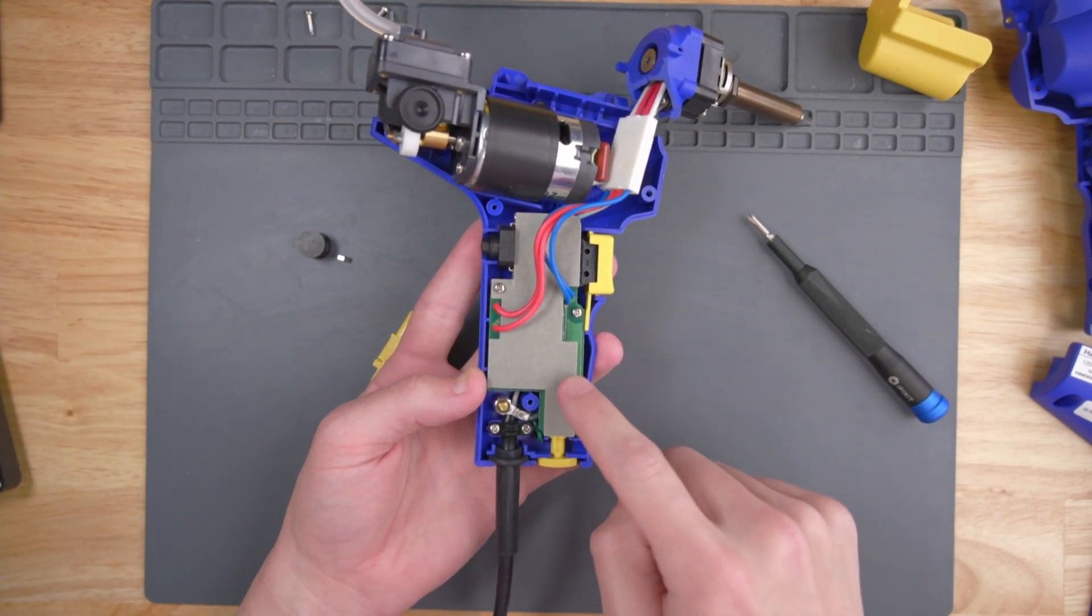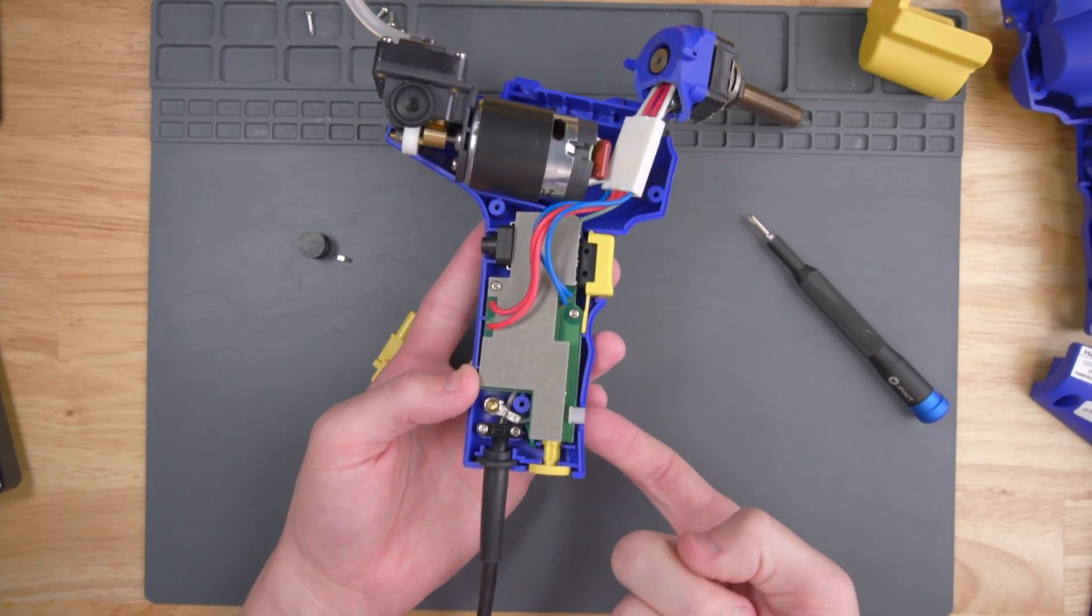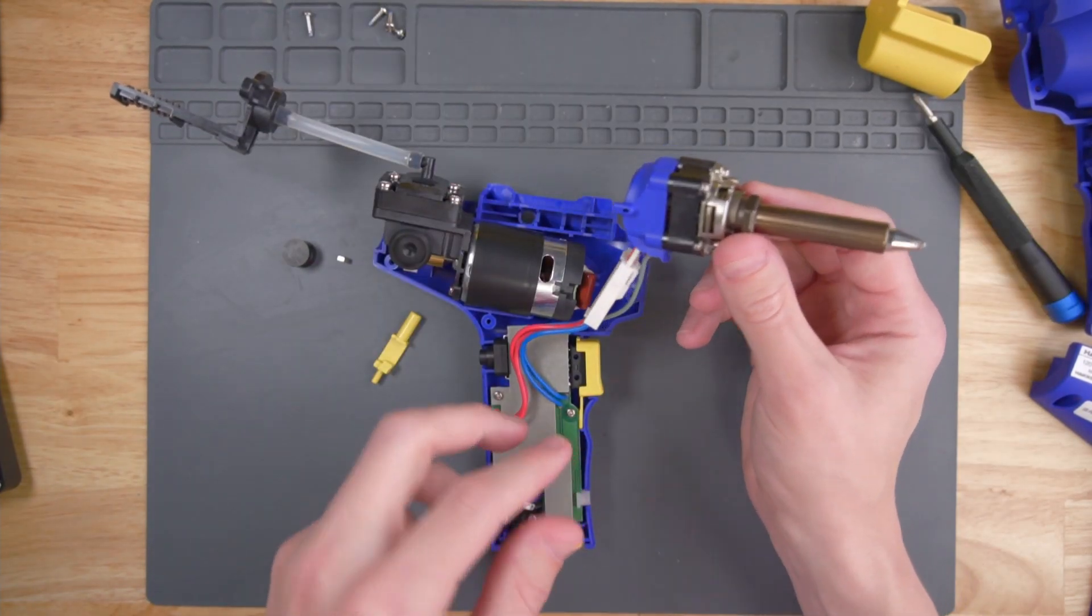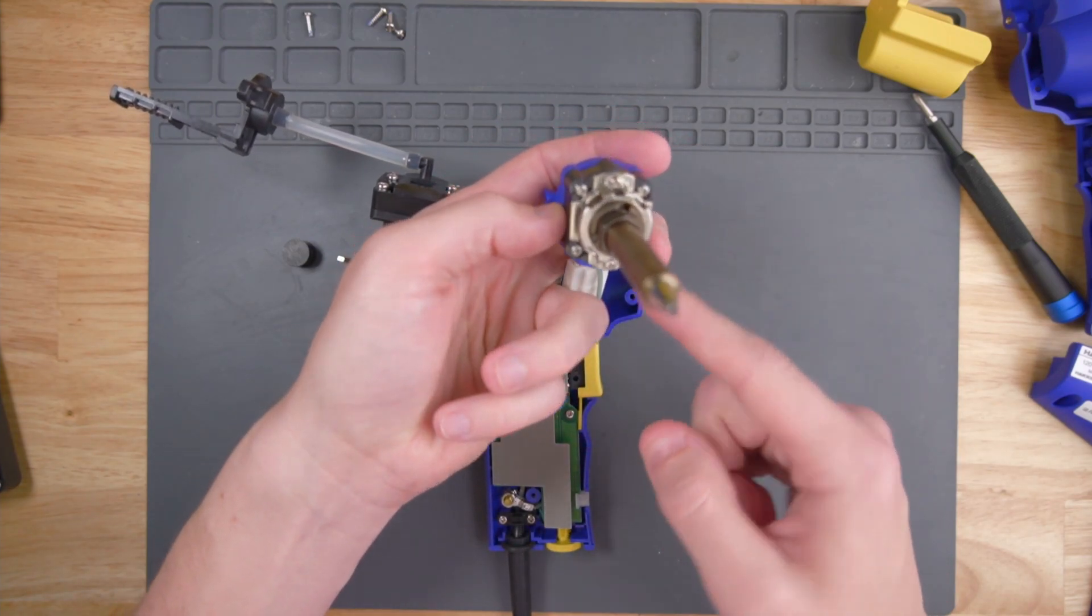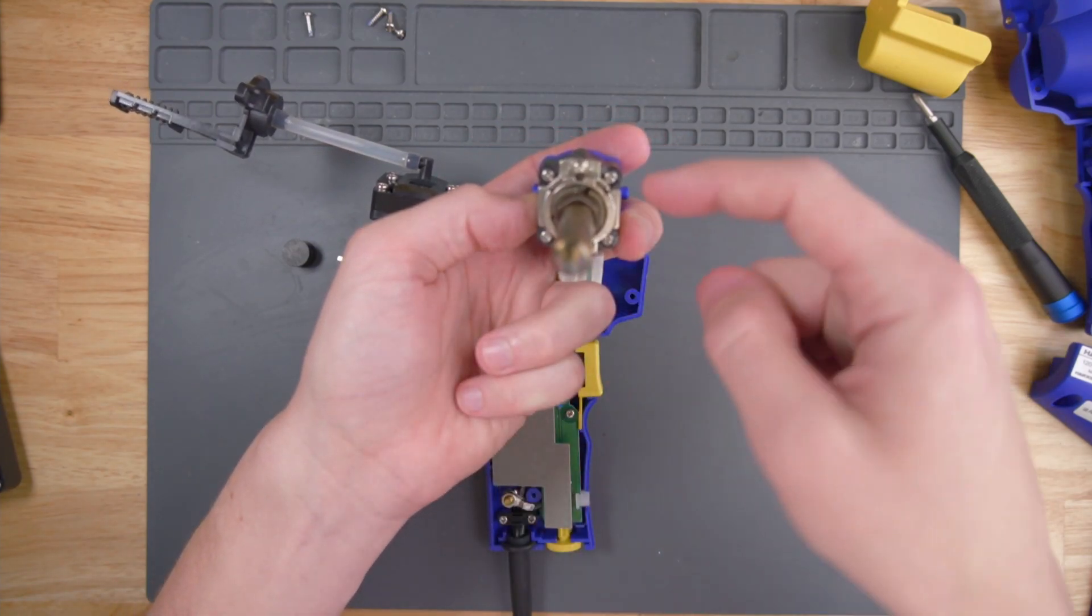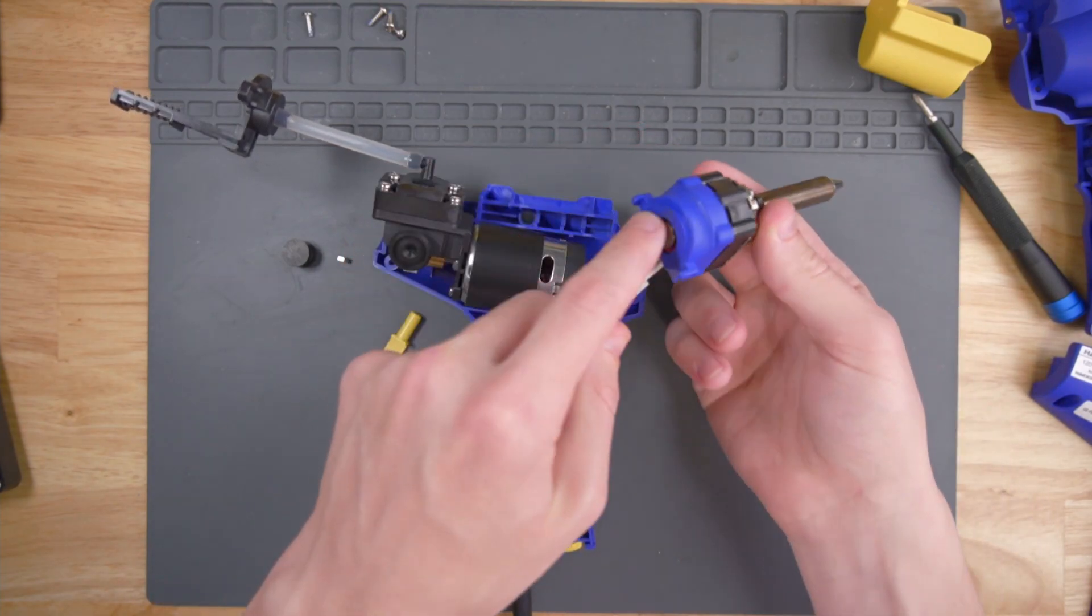There's two more screws here that keep this board attached to this side of the shell. Before we unscrew this board down here, let's take the broken piece of shell off the nozzle part up here. I think there's four screws here at the corners that keep these parts of the shell on.